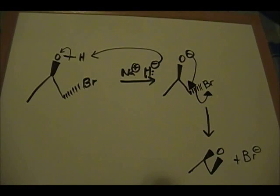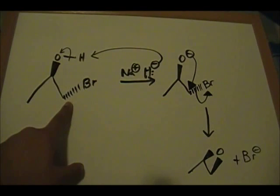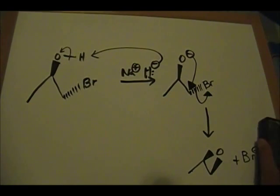That's how the Williamson ether synthesis can be utilized to form epoxides. Again, you need to have a primary alkyl halide for the reaction to work.